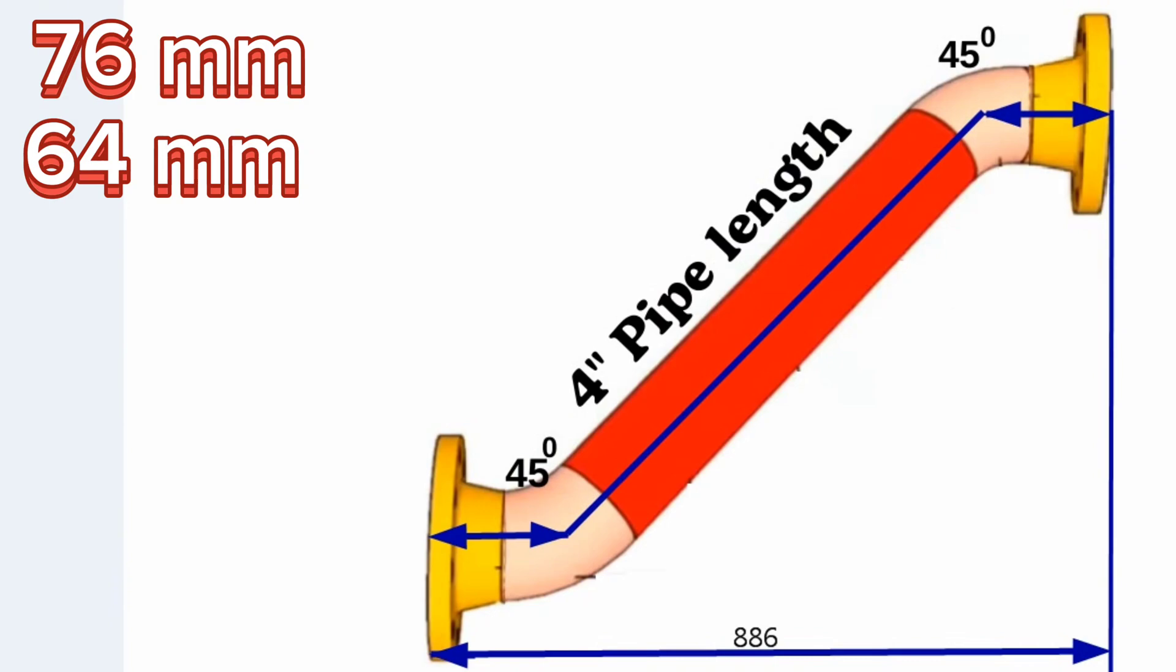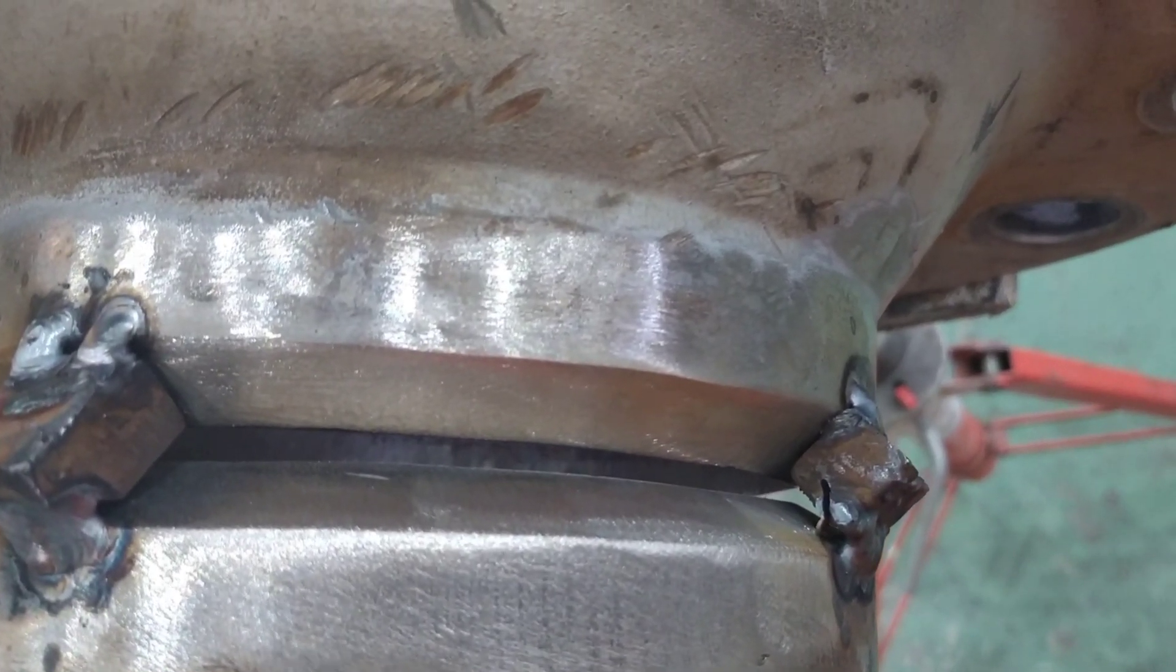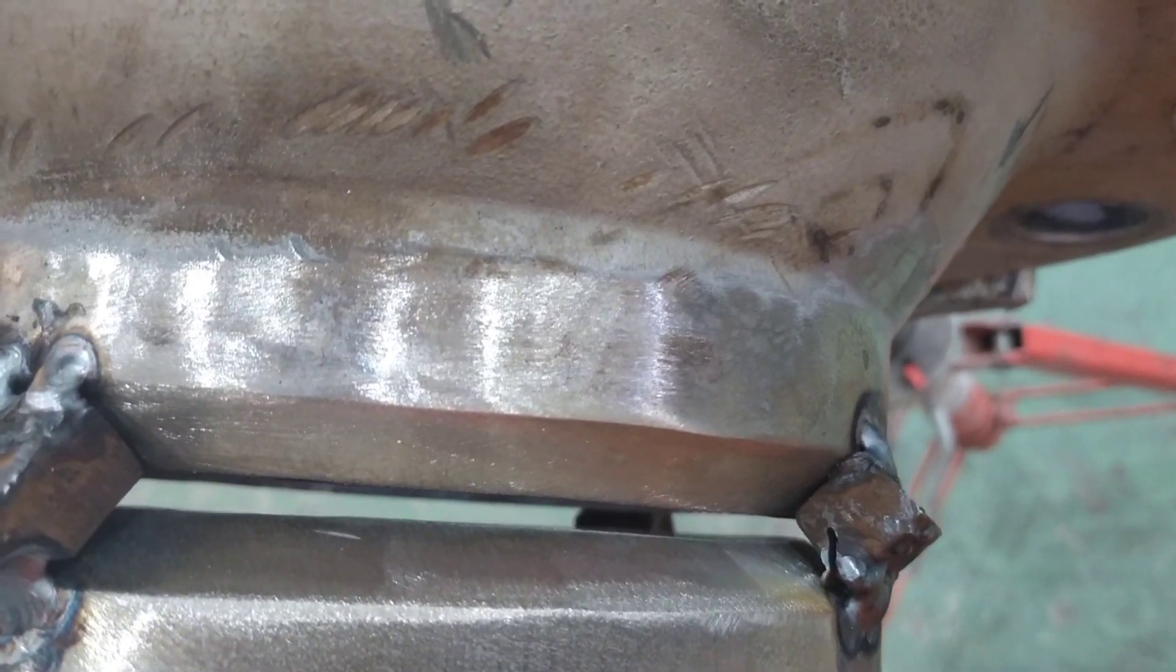During fit-up, between flange and elbow should be gap approximately 3 millimeters. It is for welding. You can see this gap as practical now in this video.